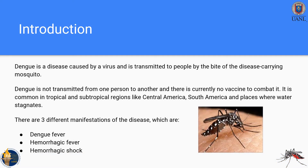Now that we know the case of Roberto and all of his symptoms, we need to know first what dengue is. Dengue is a disease caused by a virus and it is transmitted to people by the bite of a disease-carrying mosquito. One important thing to take into consideration is that dengue is not transmitted from one person to another — it is transmitted only by the bite of a disease-carrying mosquito.